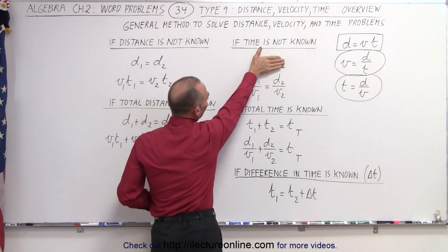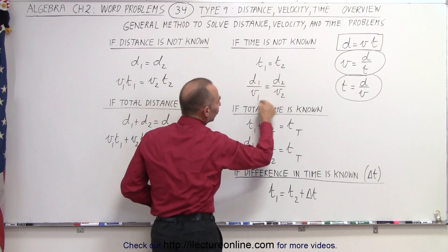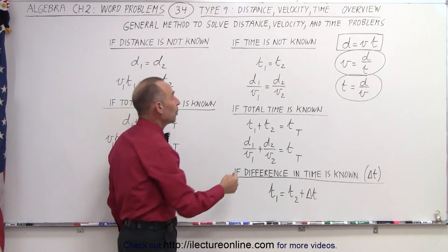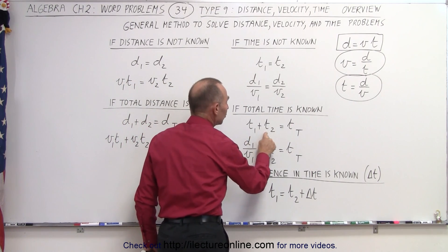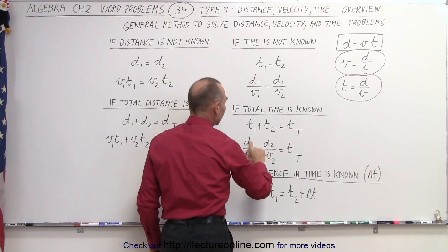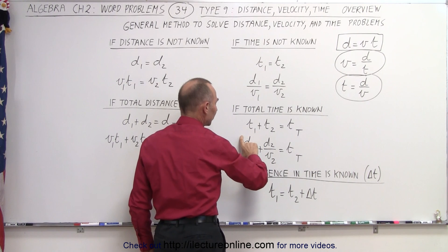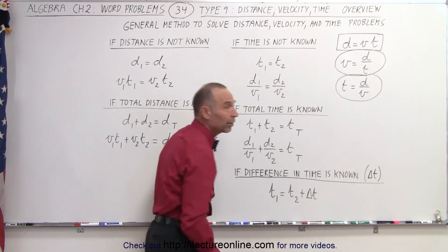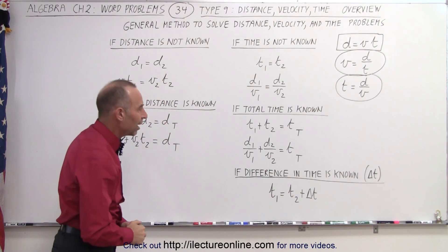We don't need to know what it is, and we can solve the equation like this. Or, if we know the total time, we can then write t1 plus t2 equals t total, and then notice that t1 again can be replaced by this, t2 can be replaced by this, and now we have an equation that doesn't require either one of the individual times.